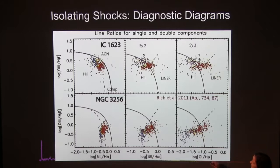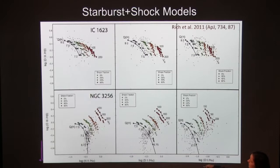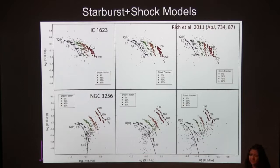The starburst points lie in the starburst region of the diagnostic diagrams, and the broader component lies offset into what we used to call the composite or LINER region — typical of shocks. We do starburst and shock models using our MAPPINGS models. The blue line shows pure star formation, the red line shows pure shocks, and different colors show mixing sequences. These look different because these galaxies have different metallicities — a high-metallicity and a low-metallicity galaxy. The shock models lie right on the data. Each spaxel has a different ratio of mixing between star formation and shocks.